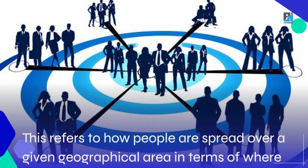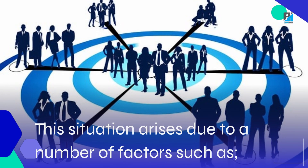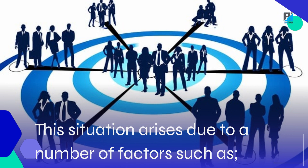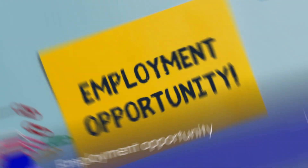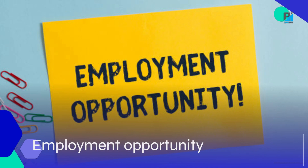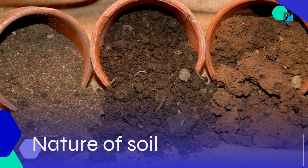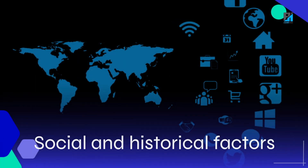Geographical distribution refers to how people are spread over a given geographical area in terms of where they live. This situation arises due to a number of factors such as climate, employment opportunity, nature of soil, and social and historical factors.